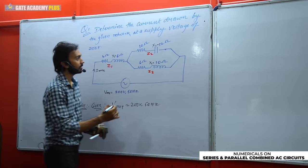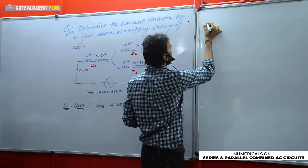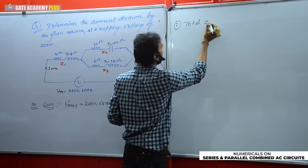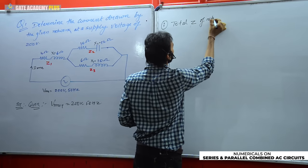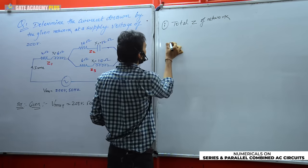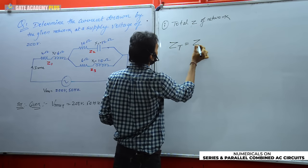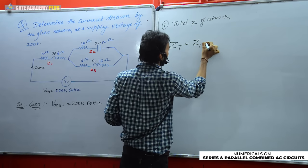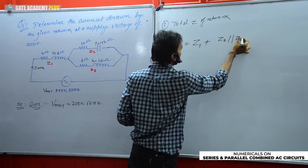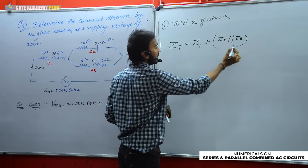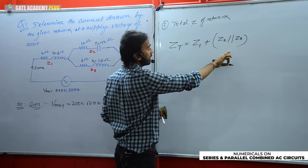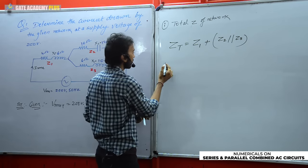Now in the first part of the solution, we find the total impedance of the network. Z_total = Z1 + (Z2 parallel Z3), since Z1 is in series with the parallel combination of Z2 and Z3. First, we find the individual branch impedances: Z1 = √(4² + 6²), Z2 = √(10² + 12²), Z3 = √(6² + 10²).